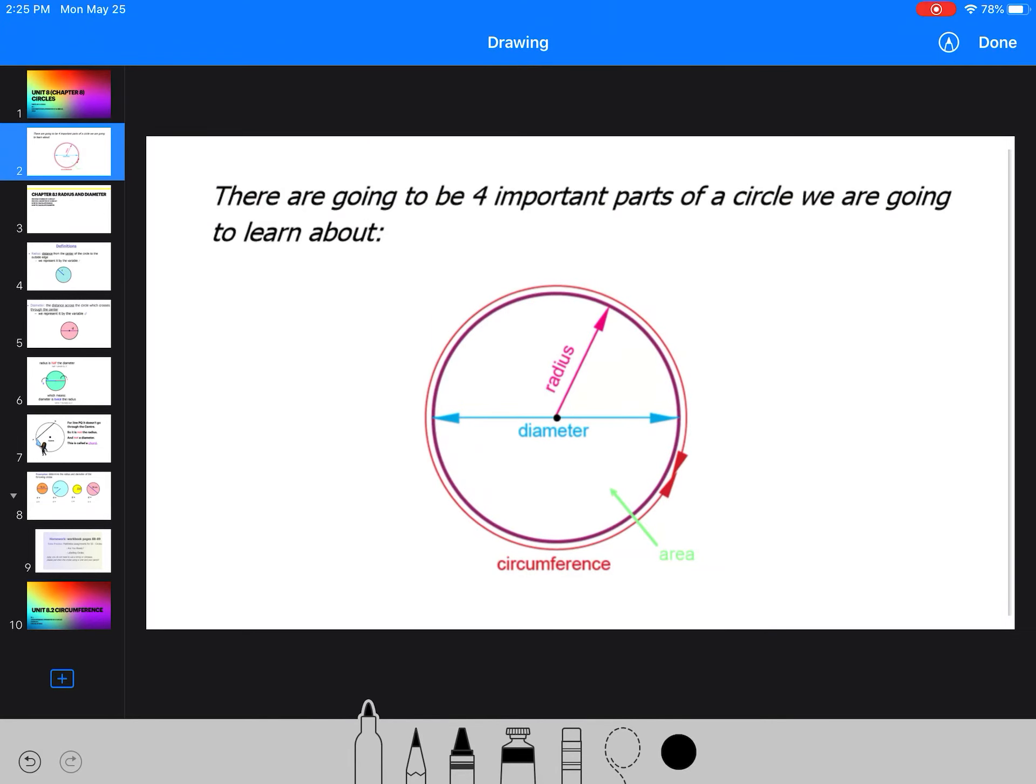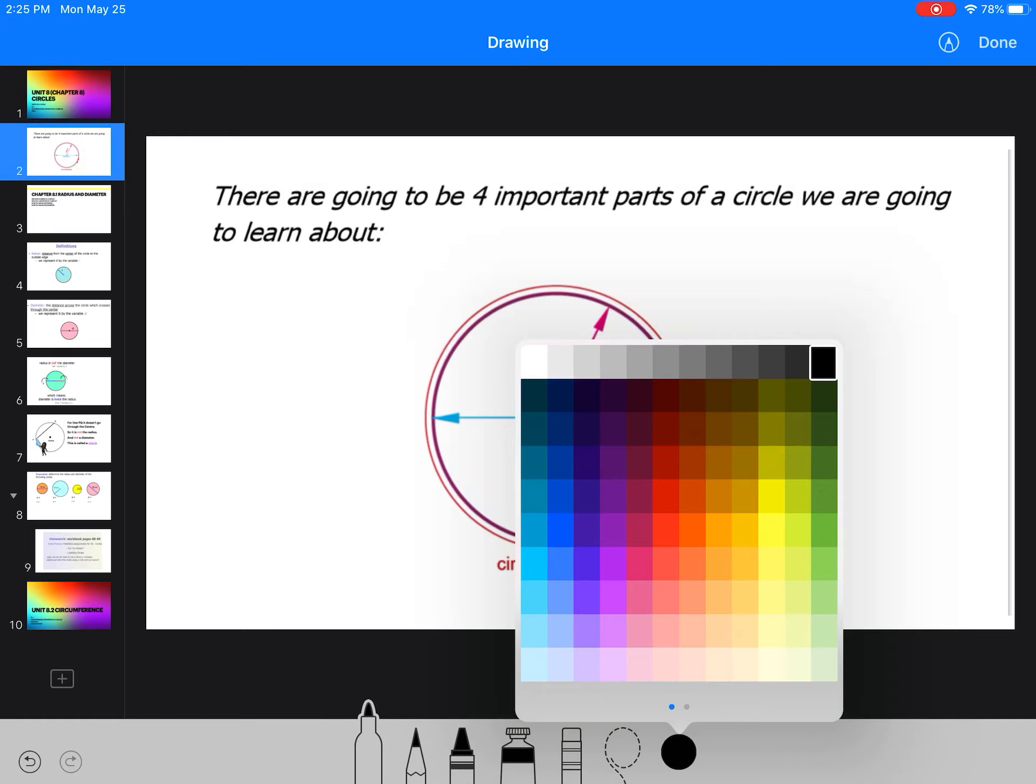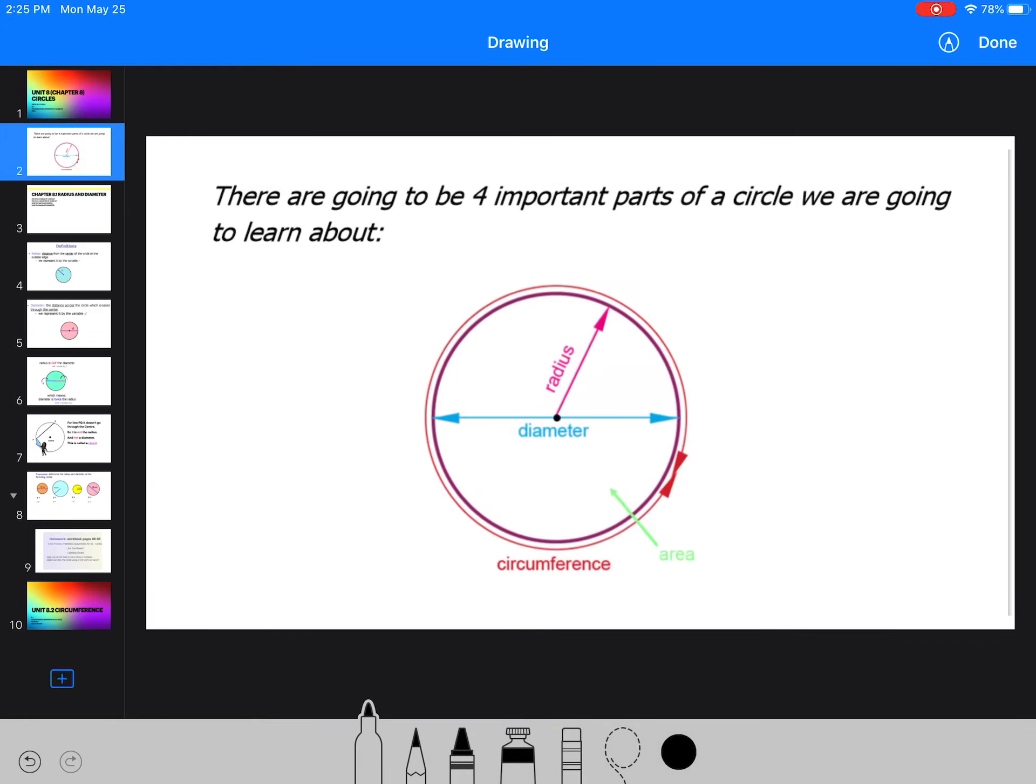There are going to be four important parts of a circle that we want to focus on. Let's do this part in red. We have the radius, which always starts from the center. So the center is that little black dot. That's the center. So from the center to the edge, that is the radius.